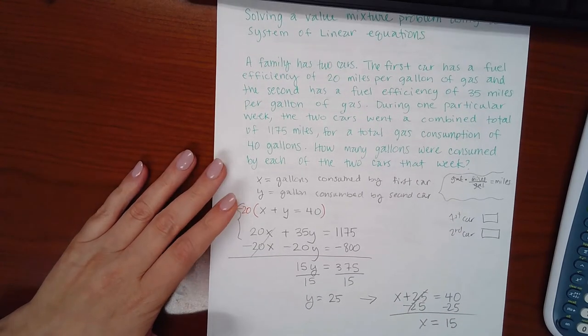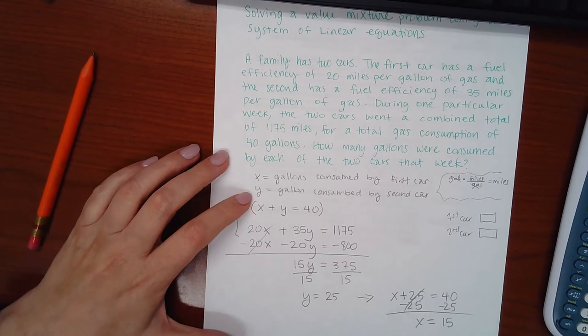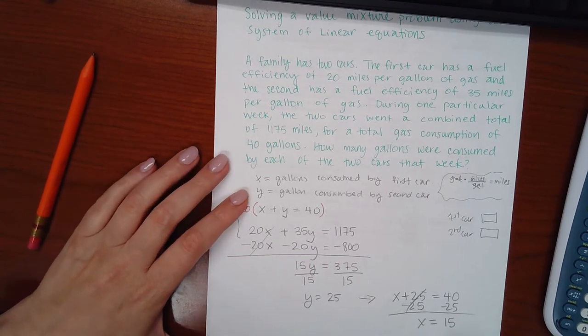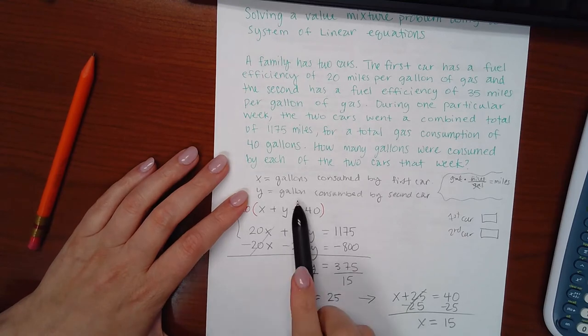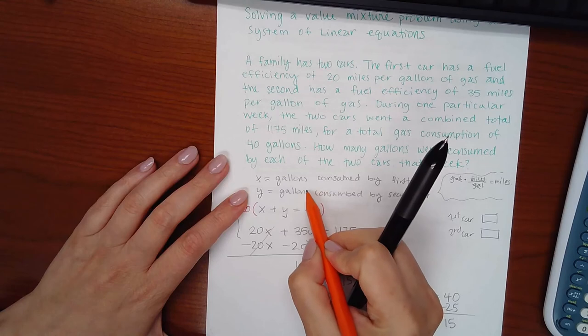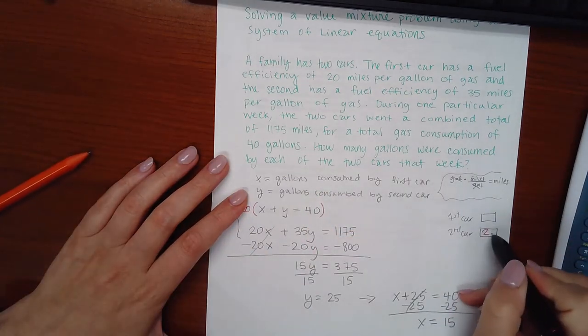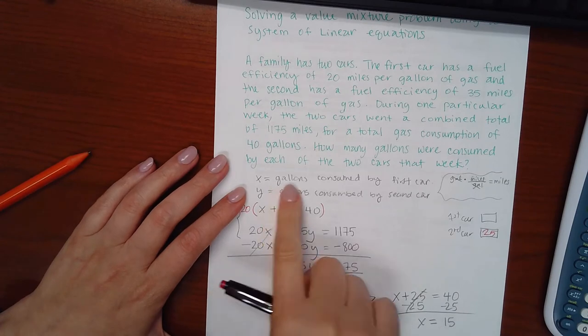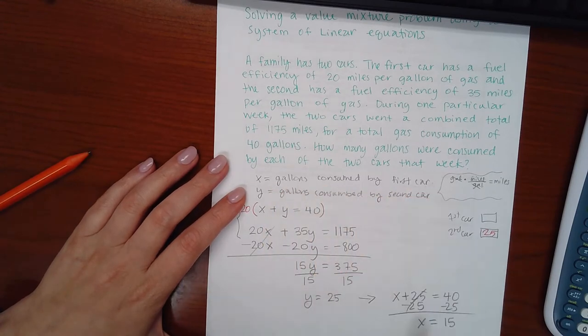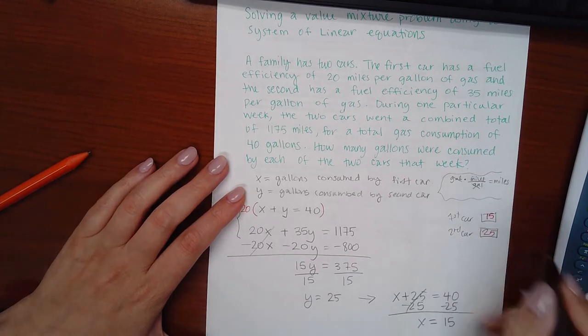And so then now I know which number I'm going to put into each box because I've labeled here what the two variables represent. Y is the gallons consumed by the second car, so that means the second car should be 25. And x represents the gallons consumed by the first car, which means the 15 should go in for the first car.